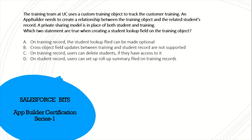The training team at Universal Container uses a custom training object to track customer training. An app builder needs to create a relationship between the training object and the selected student record. A private sharing model is in place for both student and training. Which two statements are true when creating the student lookup field on the training object?